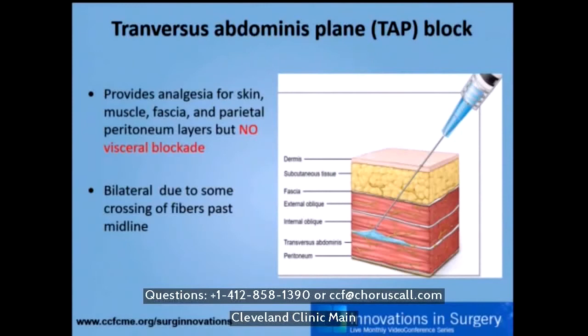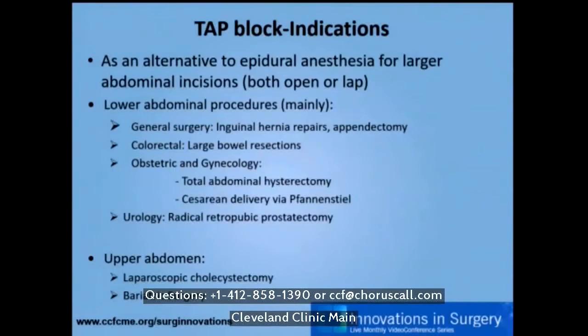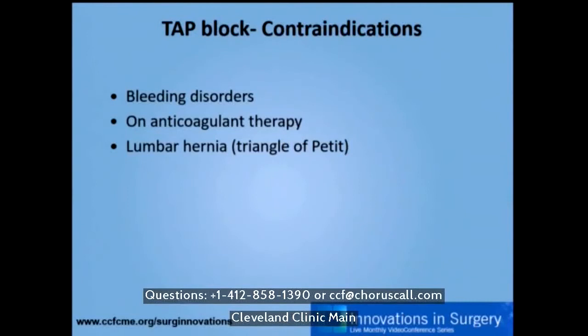It's usually given bilaterally due to crossing of fibers over the midline. The indication for TAP block is as an alternative to epidural anesthesia for larger abdominal incisions, both open and laparoscopic. Originally, it was mainly used for global abdominal procedures including inguinal hernia repair, appendectomy, colorectal resection, total abdominal hysterectomy, cesarean section, and prostatectomy. But currently, more and more upper abdominal surgeries are using TAP block, such as laparoscopic cholecystectomy and bariatric procedures.